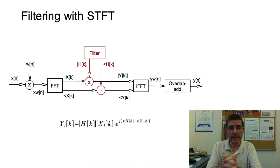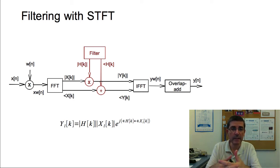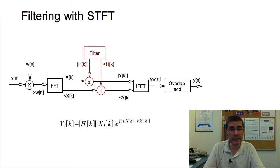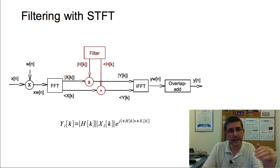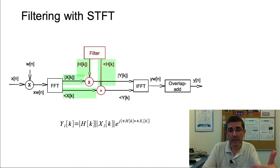Let's first talk about filtering. We discussed filtering in this course before — filtering can be implemented in the time domain using convolution, or in the frequency domain using multiplication. So here we are using the short-time Fourier transform to apply filtering in the spectrum by multiplying the magnitude and phase spectrum of the input sound with the magnitude and phase spectrum of the filter. Since magnitude and phase are separate, we sum the phase spectra and multiply the magnitude spectra.